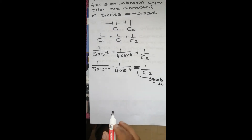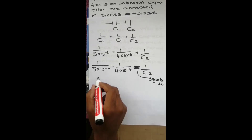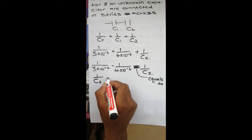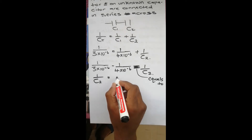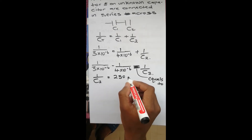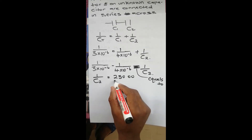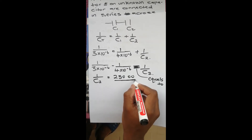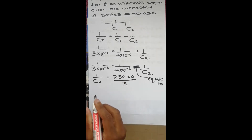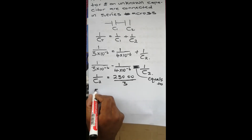Punching this into the calculator we get two hundred and fifty thousand over three. So one over C2 equals two hundred and fifty thousand over three, and then we invert them.